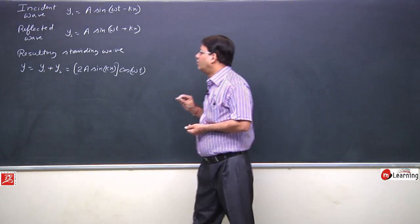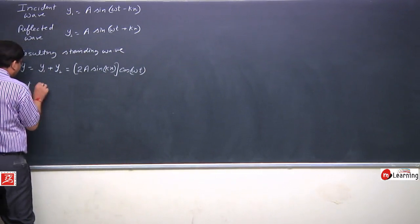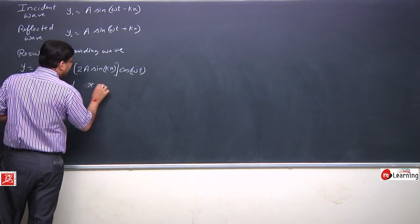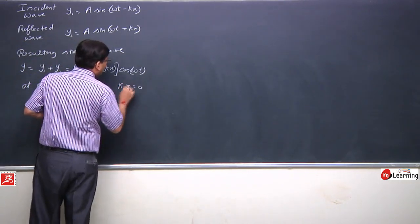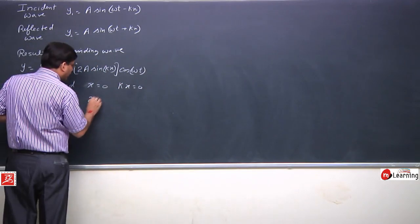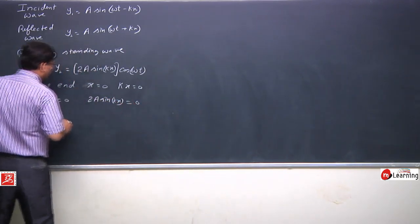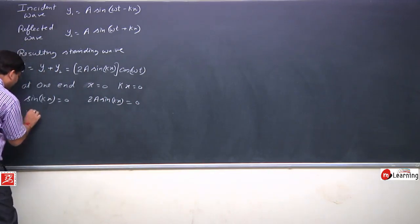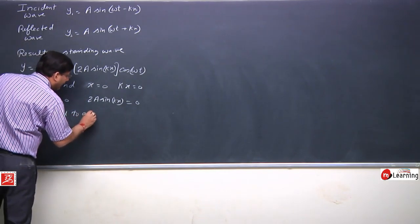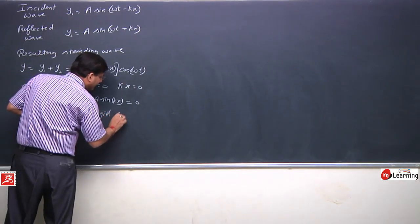Now, at one end where x = 0, kx = 0, so sin(kx) = 0, therefore 2A sin(kx) = 0. This is consistent with the fact that this end is tied to a rigid support — so the displacement is always zero there.